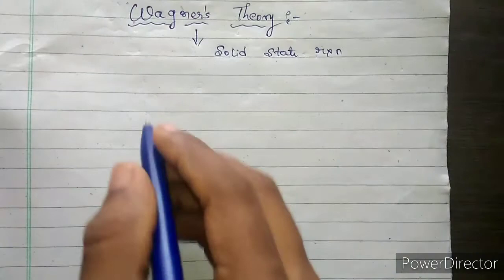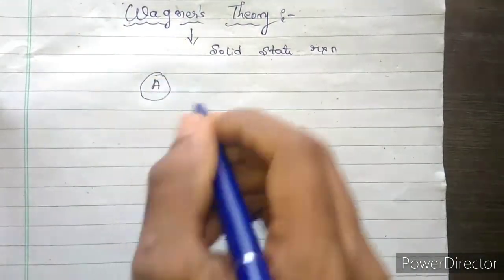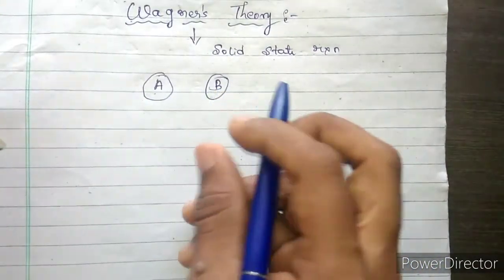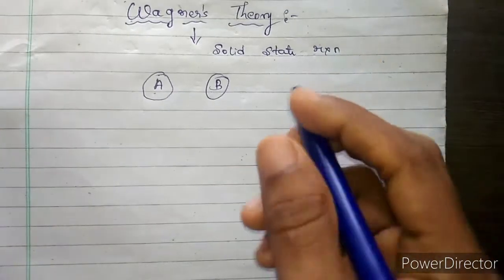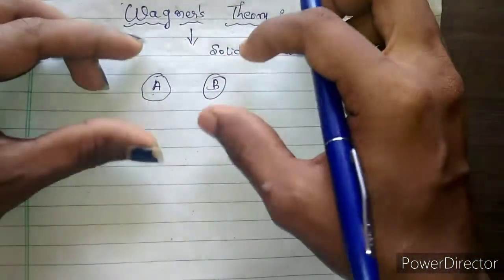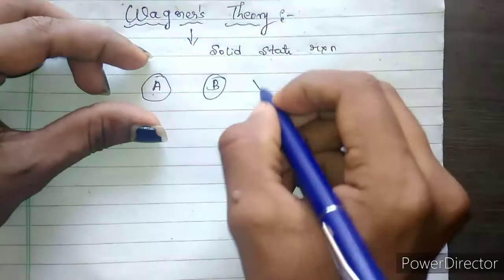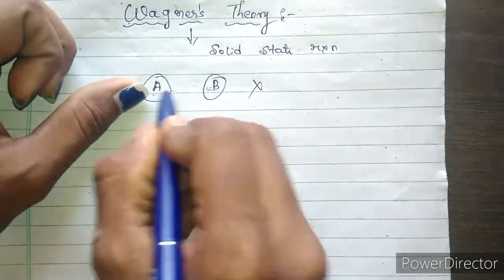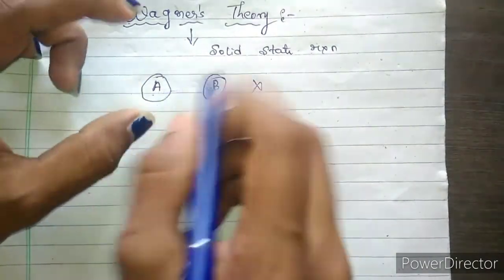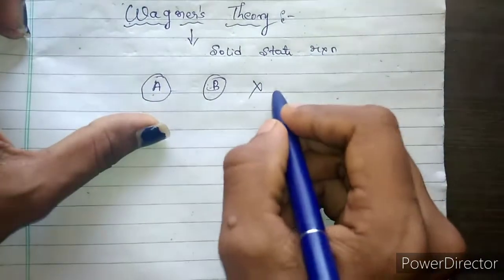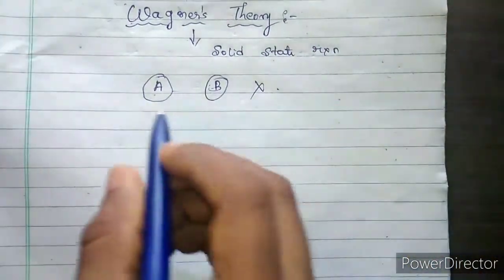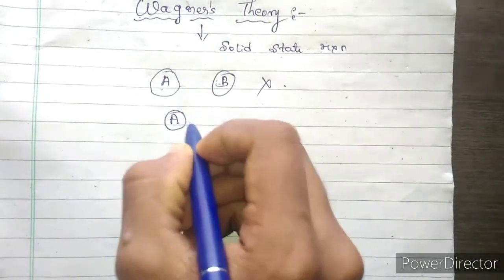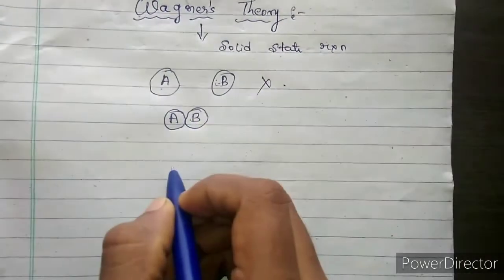Now just imagine you have two solids — say A is one solid and B is another solid. If I want to make A and B react with each other, what do I have to do? If I keep A and B at a certain distance, then A and B will not react. The solid state reaction occurs only when the two solids are kept close to each other.